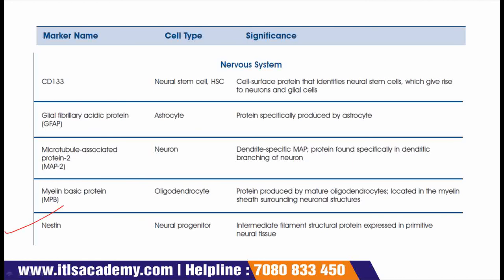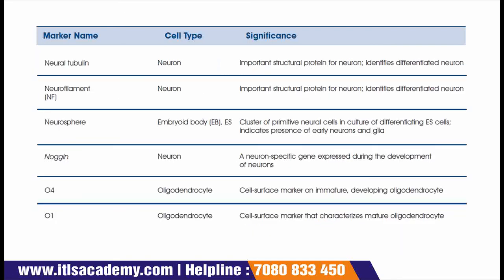The next marker is nestin, and this is present on neural progenitors. The significance of nestin is that it is an intermediate filament structural protein expressed in primitive neural tissues — not newly formed neural tissues, but primitive neural tissues. The next marker is neural tubulin, which is present in neurons. Its significance is that it is an important structural protein for neurons and it identifies differentiated neurons.